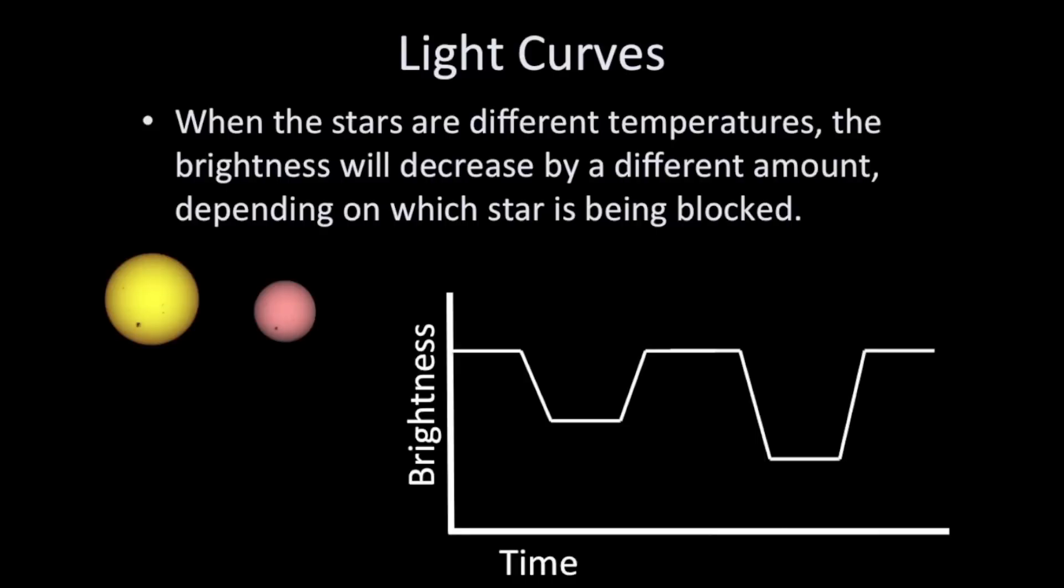So here's what the light curve would look like for the entire orbit. We'll have two dips. One will be deeper than the other. And because these stars are differently sized, then the bottom of each dip will have a flat bottom. It will be horizontal.